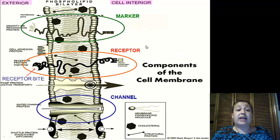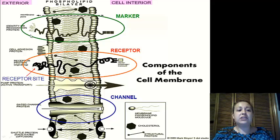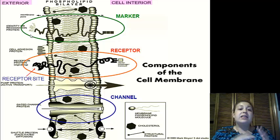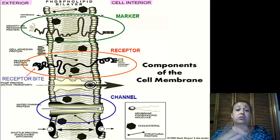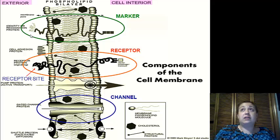So let's take a look at each of the different types. We have a cell surface marker that goes all the way through, and then it has carbohydrate chains for identity recognition. If something brushes up against it, they can tell by the cell surface marker that this is going to be a liver cell or an immune system cell.